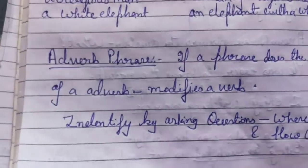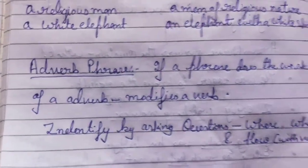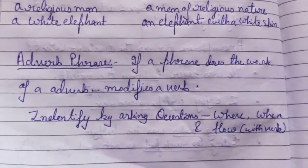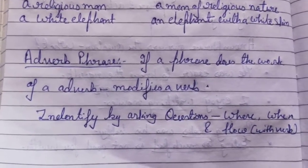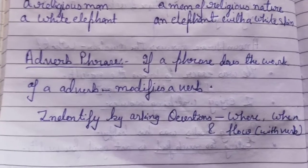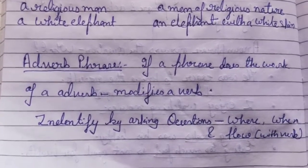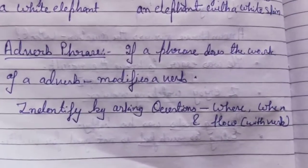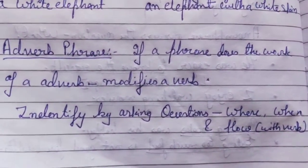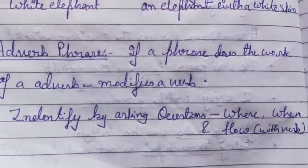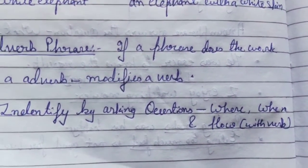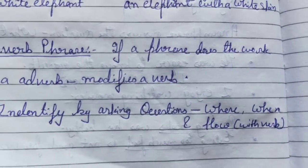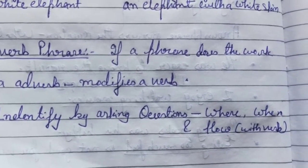Now let's come to the adverb phrase. If a phrase does the work of an adverb, it is called an adverb phrase. It modifies a verb. To identify an adverb phrase, ask the questions 'where,' 'when,' and 'how' from the verb — the answer you get will be the adverb phrase.